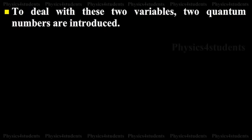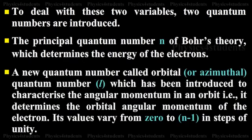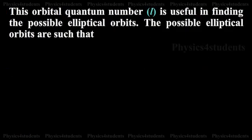To handle these two variables — angular change and distance change — two quantum numbers are introduced. The first is n, from Bohr's theory, which determines the energy level. The second is the new quantum number l, introduced to explain the characteristics of angular momentum in an orbit. Its values range from 0 to n minus 1.